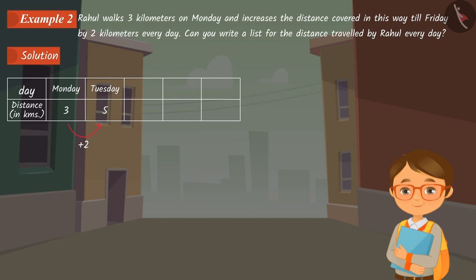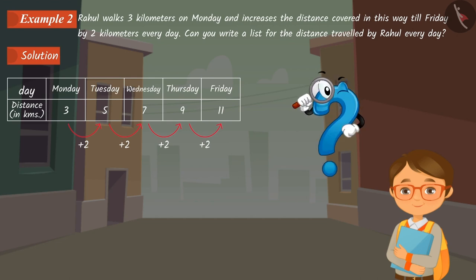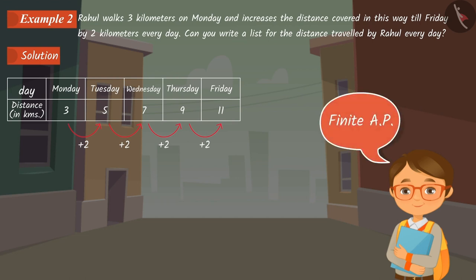Thus, the distance travelled each day can be found by adding two to the distance of the previous day. What do you notice when you look at this list? This is also an arithmetic progression because each term except the first is obtained by adding a certain number to every term. And the number of terms in this series is fixed, hence this is a finite AP.